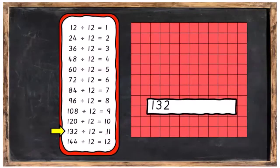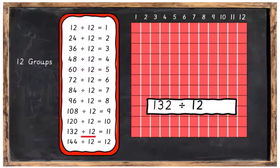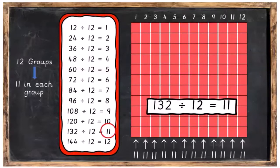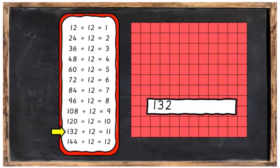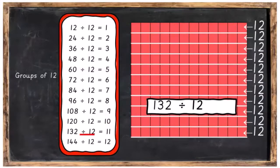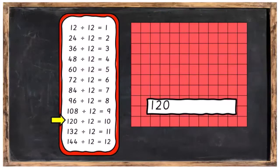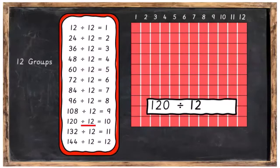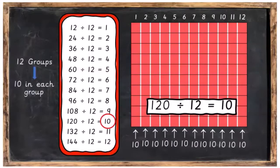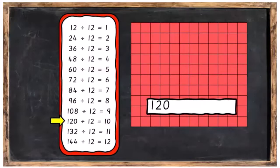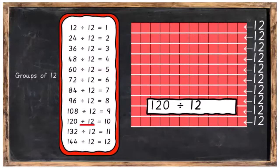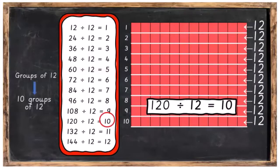Let's go on to 132. Divide that into 12 groups and inside each group you're going to have 11 in each group. The other way of saying it is 132 divided into groups of 12, and you'll have 11 groups of 12. Then 120 divided into 12 groups, you're going to have 10 in each group. Or 120 divided into groups of 12, there's going to be 10 groups of 12.